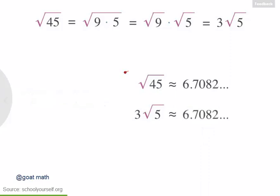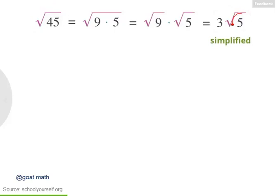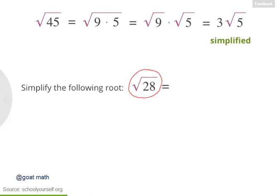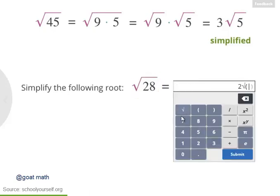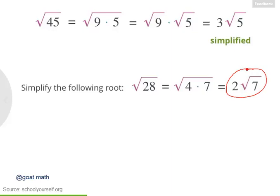Both of these expressions are indeed the same. Now, 3 root 5 is considered the simplified version of root 45, because we now have a smaller number under the square root. Try simplifying another root: the square root of 28. The square root of 28 equals the square root of 4 times 7, and the square root of 4 is 2, so root 28 equals 2 root 7.